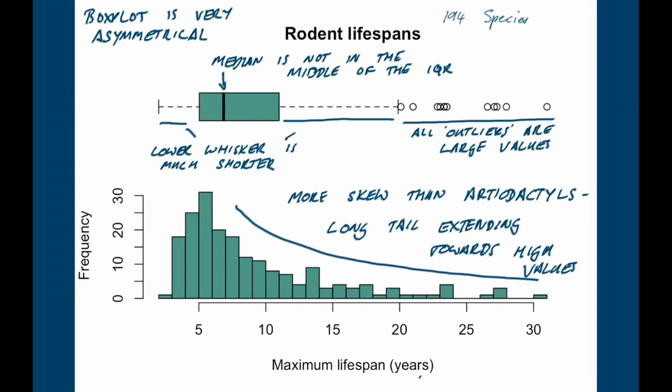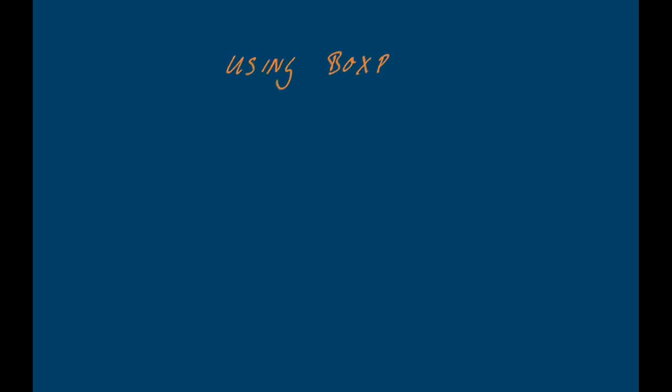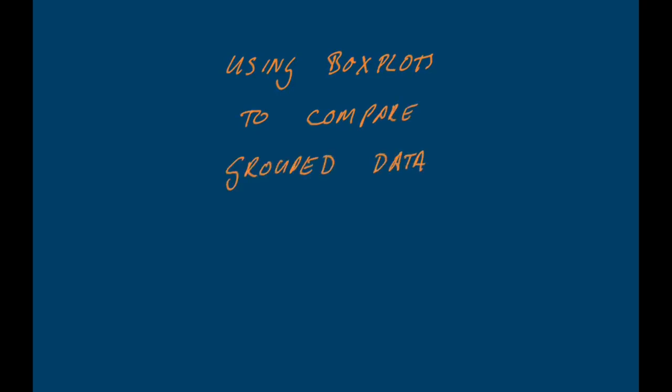So you can look at a box plot and it can tell you things about the shape and the location of your data set. You might ask why bother when you can get that information from a frequency histogram, and the answer is that box plots really come into their own when you're plotting multiple variables or when you have a grouped variable and want to make comparisons between the groups.